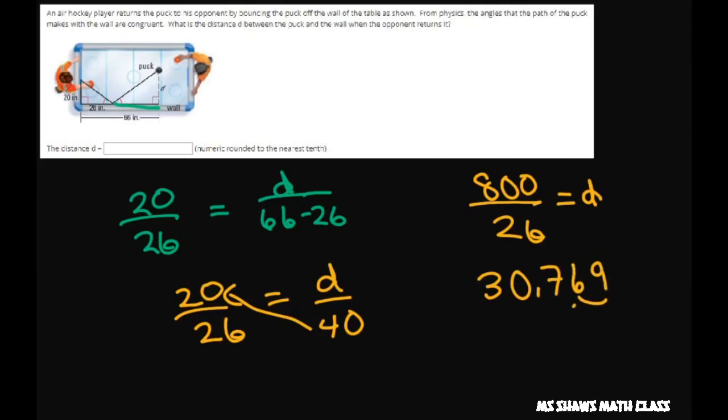Now rounding all this up, you're going to get 30.8 when we round to the nearest tenth. So that's 30.8. And that's it. Thank you.